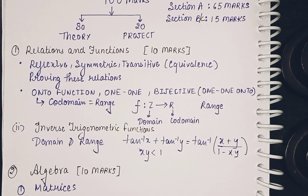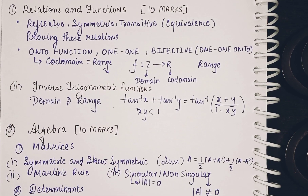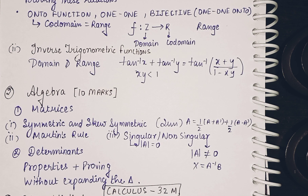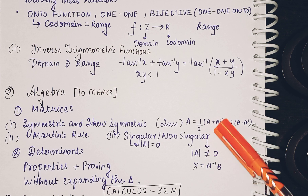Moving on to the Algebra part, it also comes for 10 marks. Matrices and Determinants are the most scoring topics in your paper. Determinants are very easy, and matrices you've been doing since Class 10 — adding, subtracting, and multiplying. The most important part here is symmetric and skew-symmetric matrices. A question can be asked like: prove that a given matrix A is a sum of a symmetric and skew-symmetric matrix.